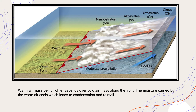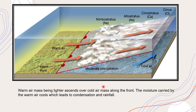Warm air, being lighter, ascends over the cold air mass along the front, while the cold air mass settles down. The moisture carried by the warm air cools, which leads to condensation and rainfall. In temperate cyclones, the warm air mass rises over the cold air mass obliquely and gradually, so condensation is very gradual and slow. The precipitation is in the form of drizzle — that is why it is known as moderate precipitation. Widespread drizzle is formed and rain and squalls occur as the cold front passes.